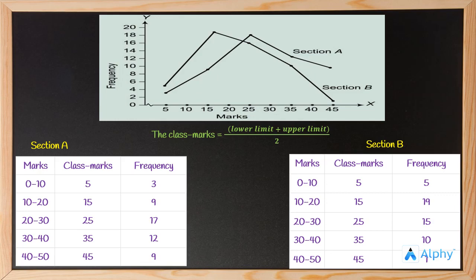On the x-axis, which is the horizontal axis, we have taken the class marks ranging from 5, 10, 15, 20, and going on till 45. On the y-axis, which is the vertical axis, we have taken the frequencies, with a scale of 1 unit equal to 2 students.